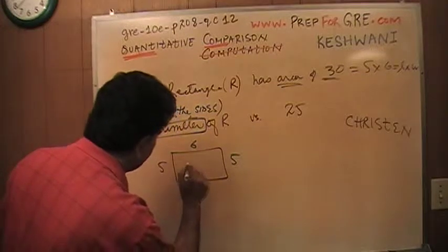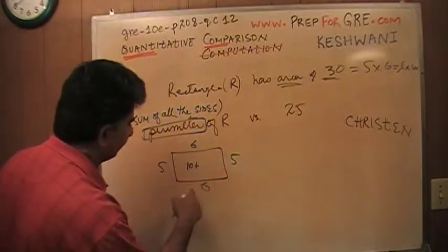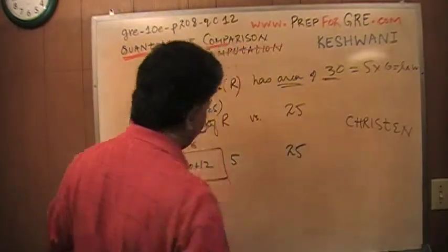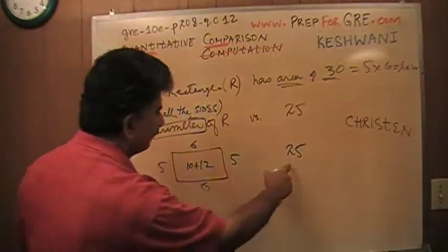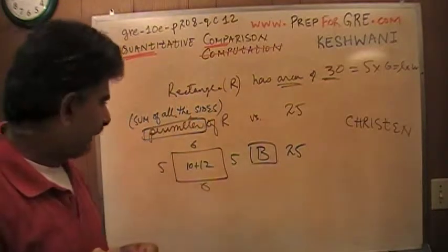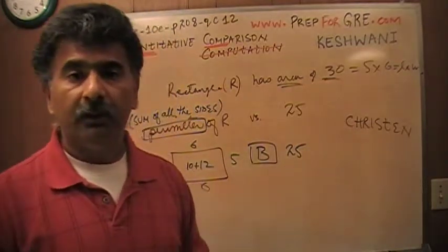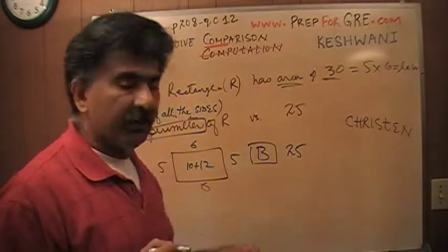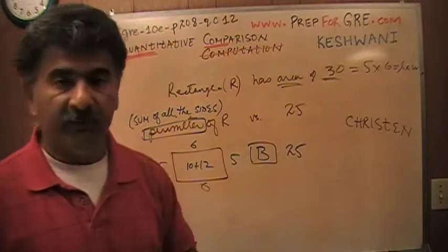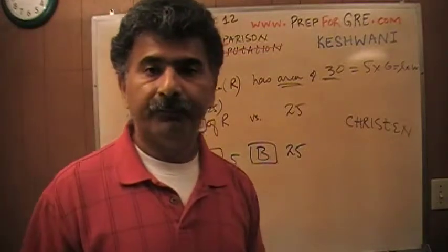The perimeter of this thing is 5 plus 5 is 10 and 6 plus 6 is 12. It is 22. They want you to compare with 25. This is 22, this is 25. Therefore this quantity is bigger. The answer is B. So it works out that quantity in column B is bigger. Is it?